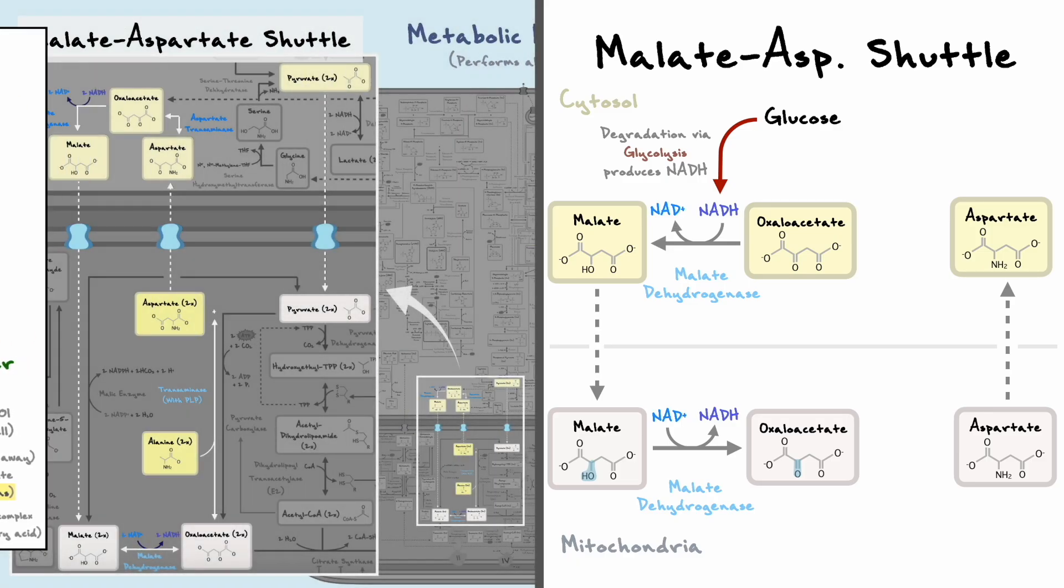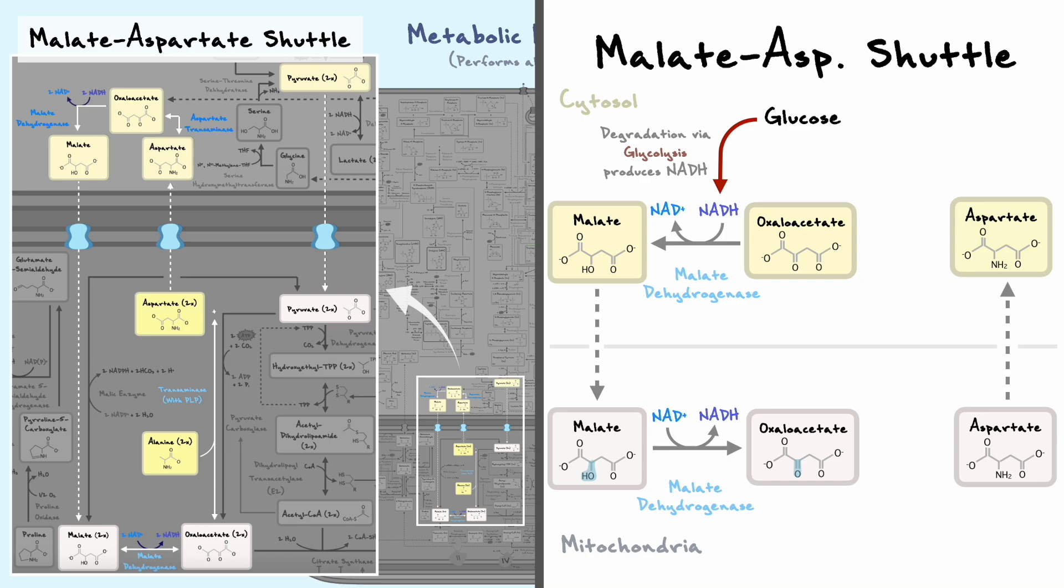At this stage, we have some NADH in the cytosol, but since oxaloacetate cannot cross the mitochondrion, the second half of the shuttle will have the objective to do so. This is where aspartate comes into play as the reversible conversion between oxaloacetate and aspartate completes the pathway.